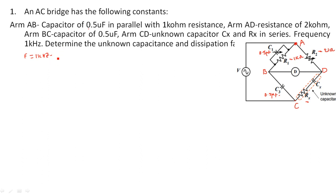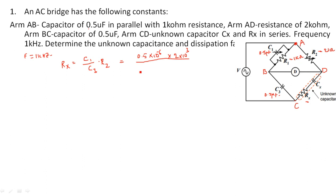We need to determine the unknown capacitance and the dissipation factor. From the Schering bridge balanced condition, the formula for Rx is: Rx = C1 × R2 / C3. Substituting: C1 = 0.5 × 10⁻⁶, R2 = 2 × 10³, C3 = 0.5 × 10⁻⁶. Since C1 and C3 are equal, they cancel, giving Rx = 2 kilo ohms.